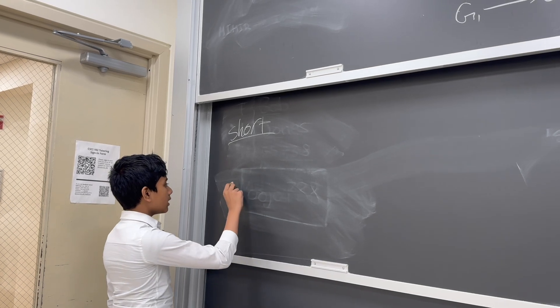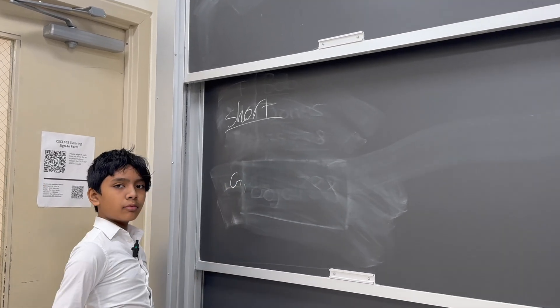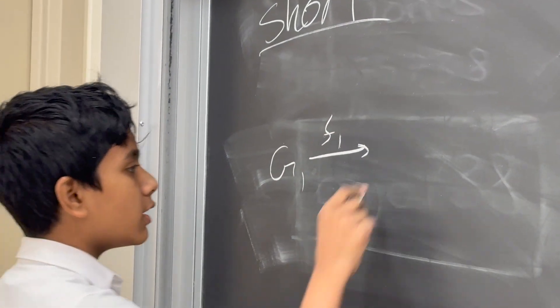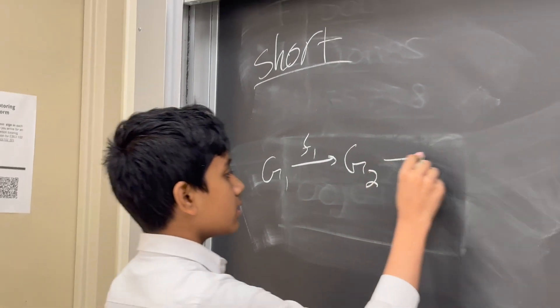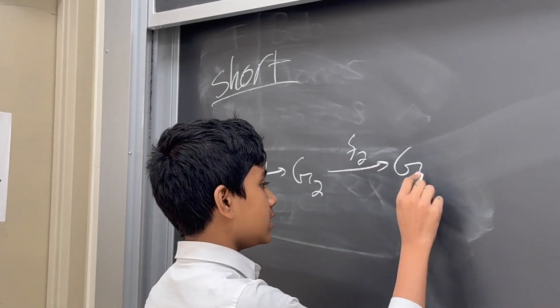Basically, what they are is given group 1, and then a function such that f1 of g1 is equal to g2, then if we have f2 of g2 equal to g3, what's special about an exact sequence?